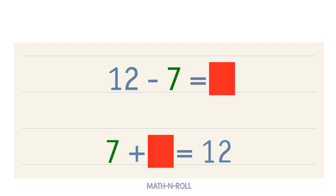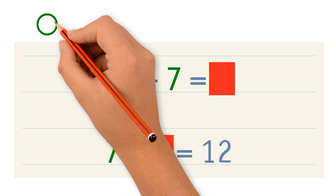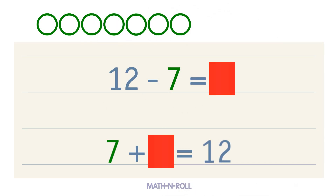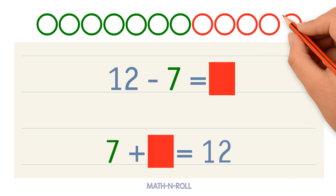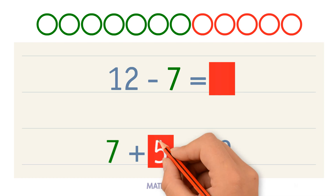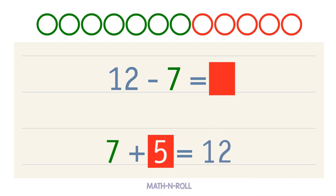Use the model to solve. We have 7 green circles. How many more circles do we need to make 12? 1, 2, 3, 4, 5. We needed 5 more circles to make 12, so 7 plus 5 equals 12. 5 is our blank, so 12 minus 7 equals 5.